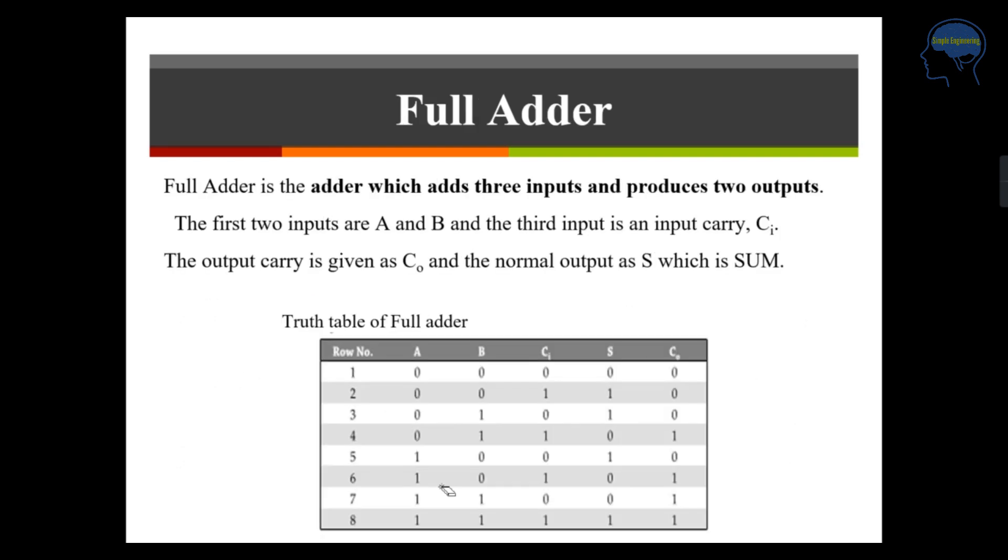Next, we can see a full adder. Full adder is the adder which adds three inputs and it produces an output which is you will be having two outputs, sum and C0. The first two inputs will be your A and B and the third input is an input carry which is C in.